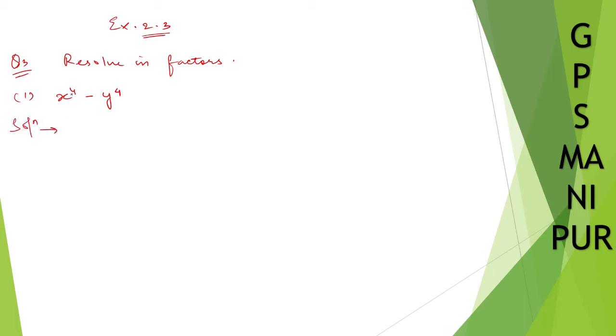This is simple. X to the power 4 you can write down as x square whole square, and y to the power 4 you can write down as y square whole square. I hope you know the formula: if you take this one whole as a and this one whole as b...